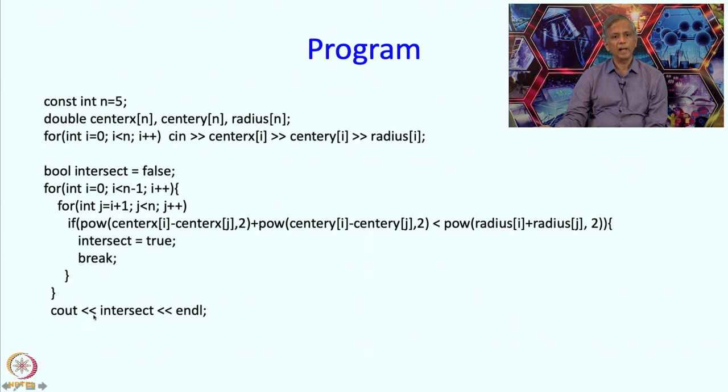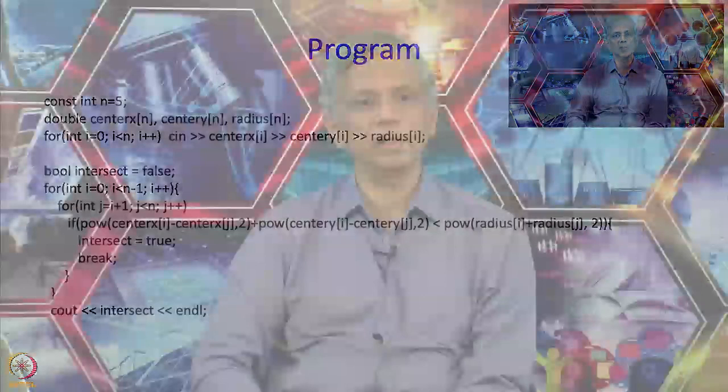So if I run through this entire nested loop and do not find an intersection, then my intersection will remain false. So in any case, when I come to this point, either through the break or after going through all the iterations, intersect will tell me whether the disks intersect or not. So that is what I am going to print and that is going to be the end of my program. And of course I have to put this in a main program and I have to include header files and things like that.